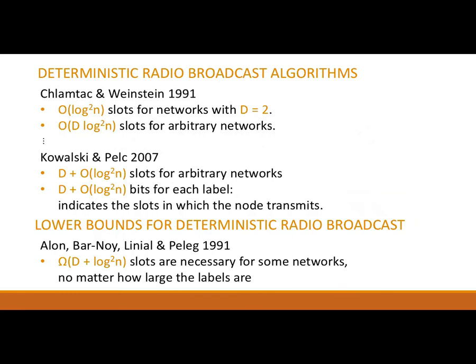The first interesting deterministic radio broadcast algorithm was published by Chlamtac and Weinstein in 1991. They gave an O(log²N) algorithm for networks with source eccentricity 2, and then used this algorithm one level at a time to get an O(D log²N) algorithm for networks with source eccentricity D. Their algorithm assumes nodes have distinct identifiers. Over the next 16 years, there was a series of increasingly faster deterministic radio broadcast algorithms, culminating in an algorithm by Kowalski and Pelc.